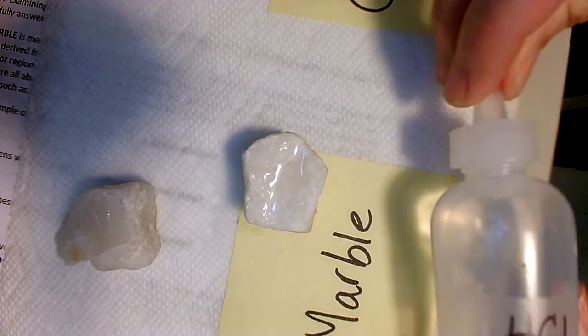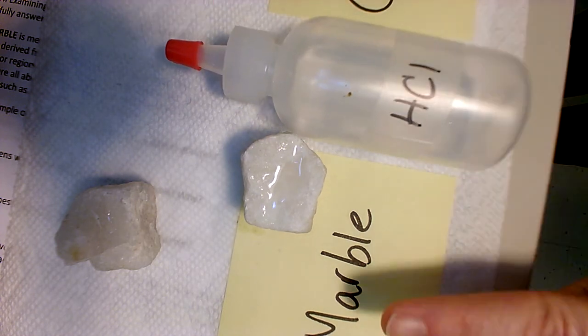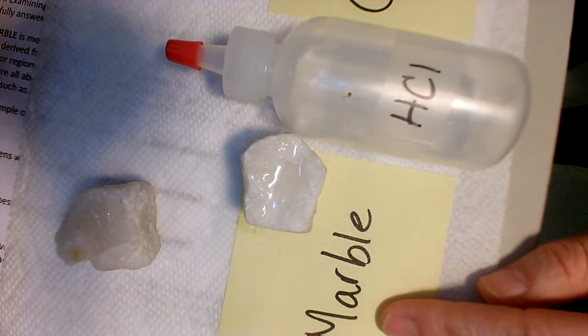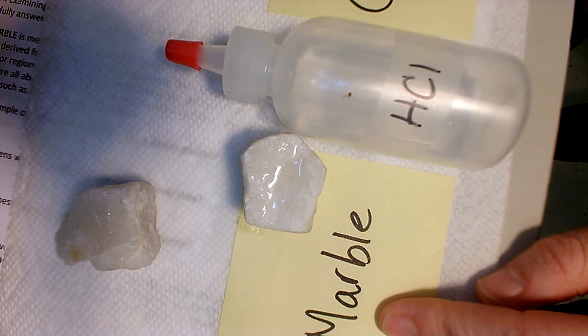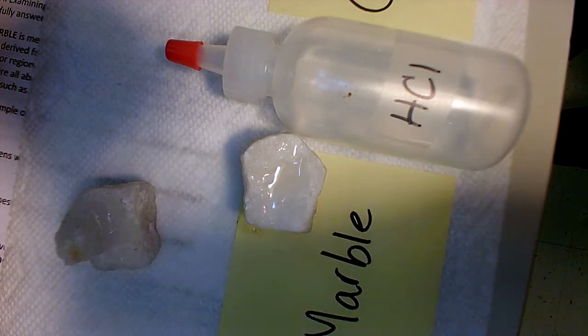So in conclusion, marble does react with the hydrochloric acid because the parent rock of marble is limestone, which is made out of calcite. And you probably remember that the mineral calcite is a carbonate rock and it reacts with hydrochloric acid.